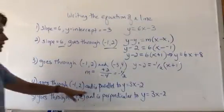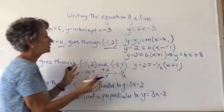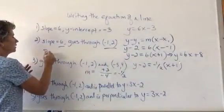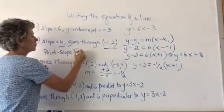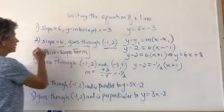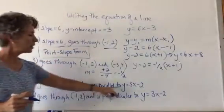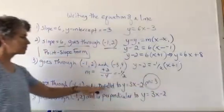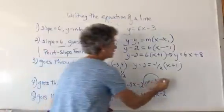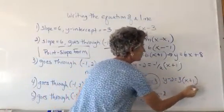If it goes through a certain point and it's parallel, remember: parallel lines have the same slope. So when you use point-slope form, you need the point and the slope. We've got our point and our slope. Our slope is going to be 3, since parallel lines have the same slope. So this one would be y minus 2 equals 3 times x plus 1.